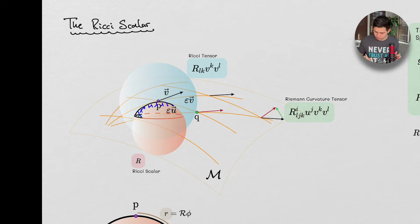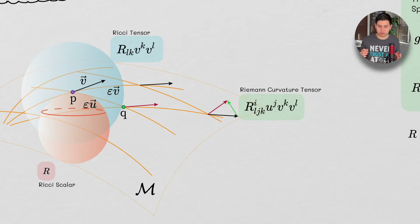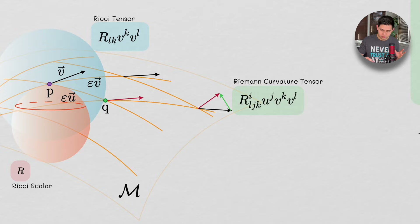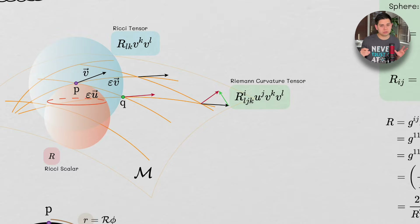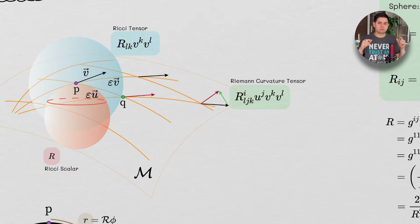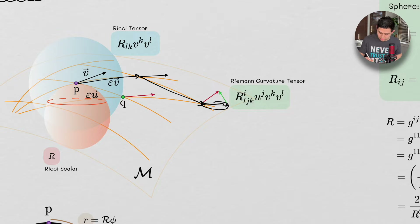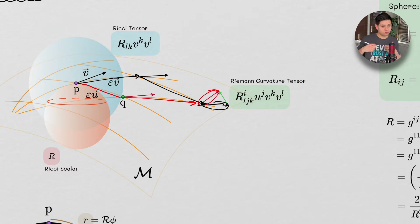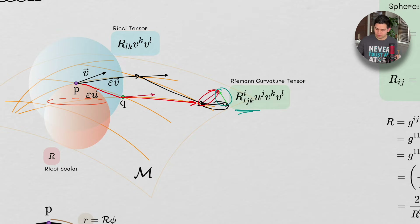We're going to start off with a brief review. We talked about the Riemann curvature tensor — this tensorial object that compared the result of parallel transporting a vector along a manifold in two different directions but arriving at the same point. Going in one direction then another gives one vector; going in the reverse order gives a different vector. That difference is encoded in the Riemann curvature tensor.